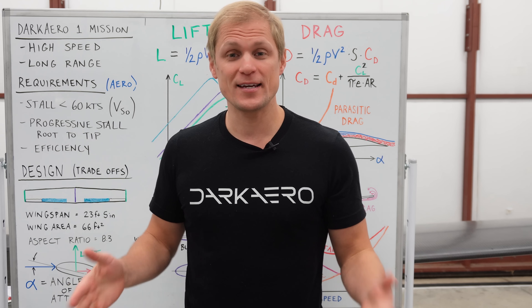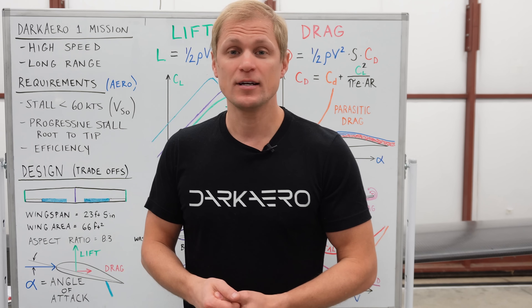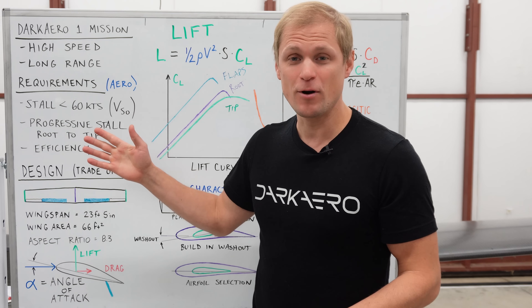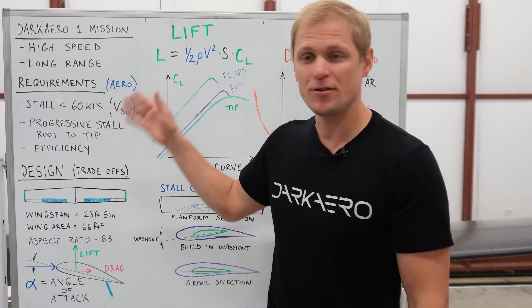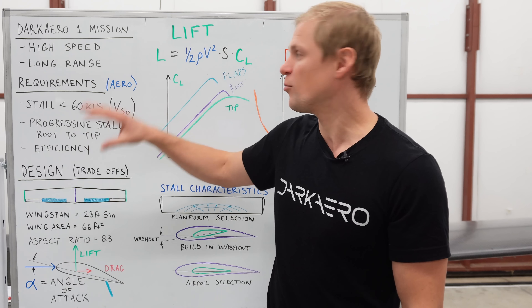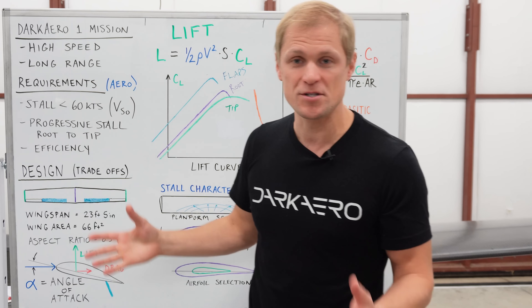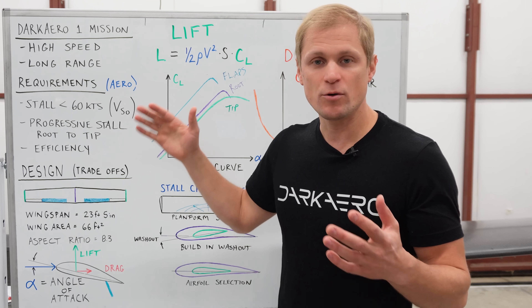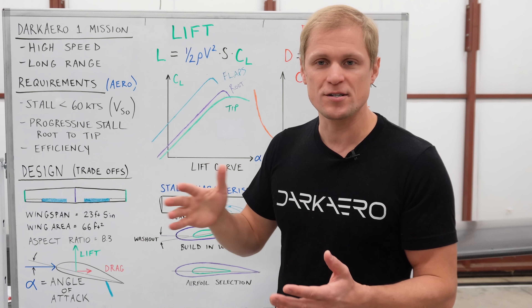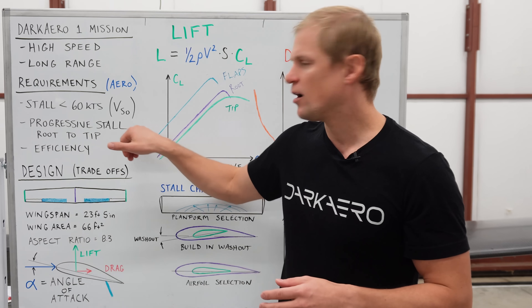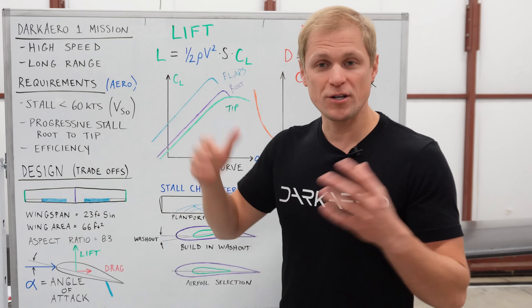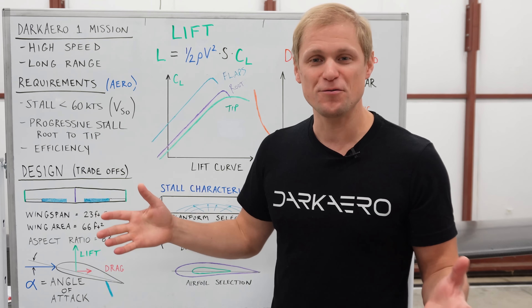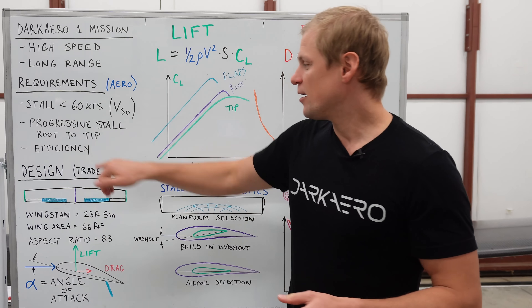The design of any aircraft wing is governed by the mission requirements for that aircraft. For the Dark Air 1, our mission is high-speed, long-range flight. There are sub-requirements that feed into the mission requirements. We want to achieve a stall speed less than 60 knots, and when the wing does stall, we want a progressive stall that starts at the root and progresses toward the tip. We also want to achieve really good efficiency — it's great to fly fast and far, but filling up a huge fuel tank at the end of the mission is not ideal.